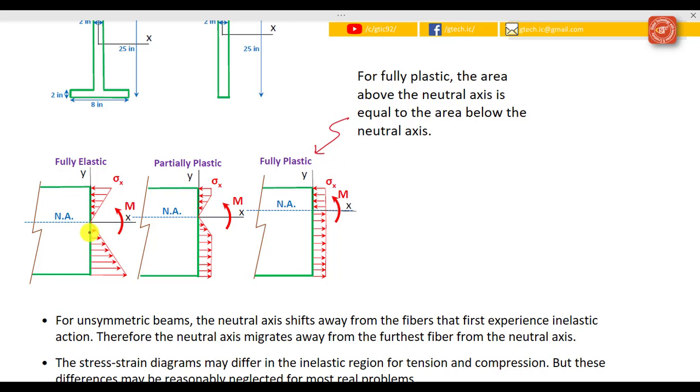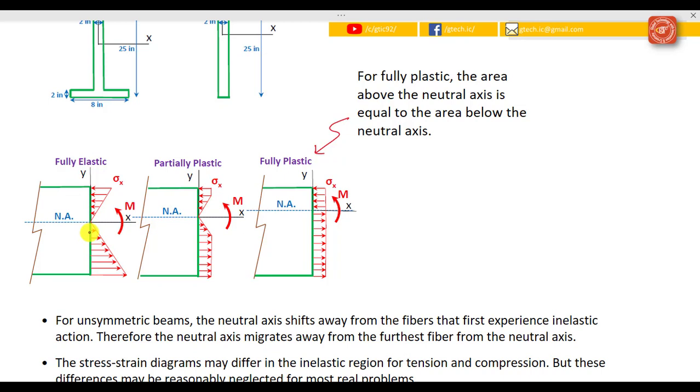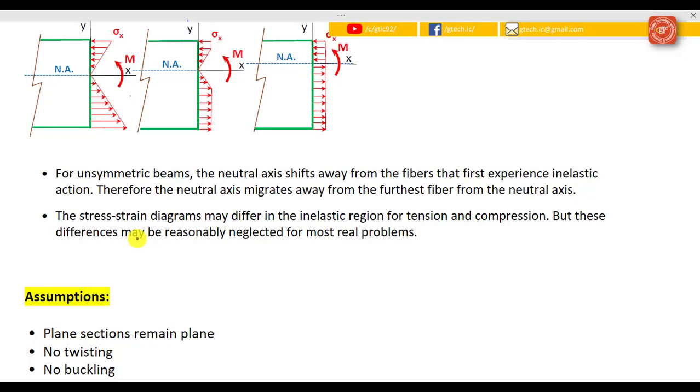For unsymmetrical beams, you will notice that the neutral axis shifts away from the fiber that first experiences the inelastic action. In this case it shifts away from this lower section of the beam and migrates further and further away until we get fully plastic. At fully plastic condition, the area above the neutral axis is equal to the area below the neutral axis. Again there is some difference in the stress-strain diagram for inelastic region of tension and compression.